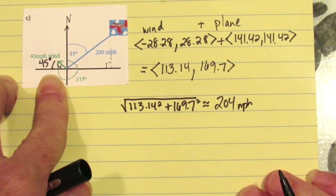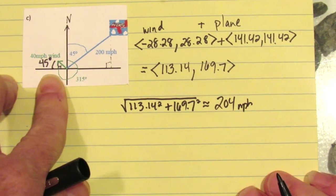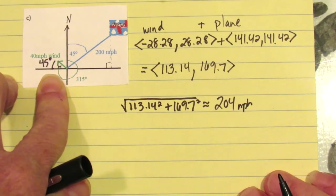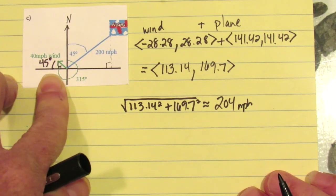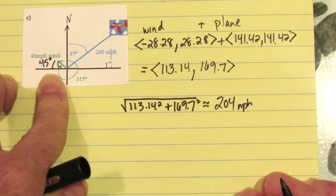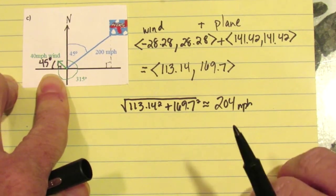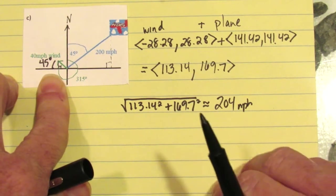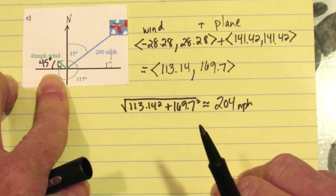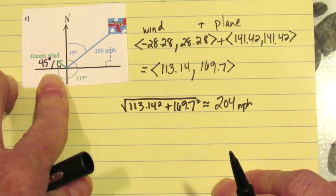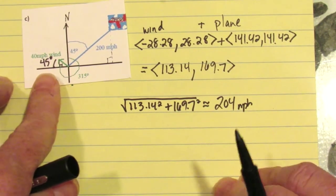So the wind is still pushing the plane a little bit — speeding it up slightly — but not nearly as much as when the wind was directly in the plane's path, or even when it was blowing directly north.